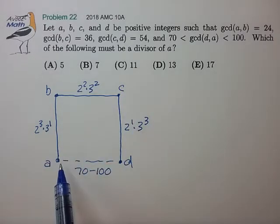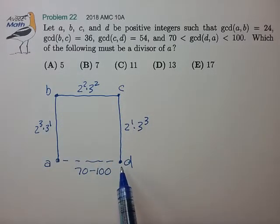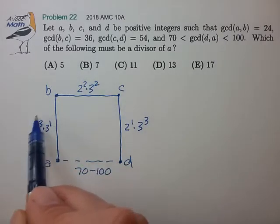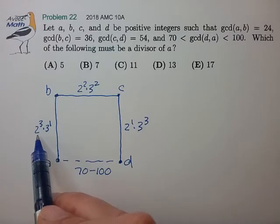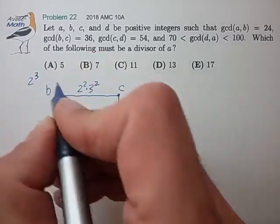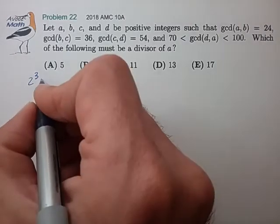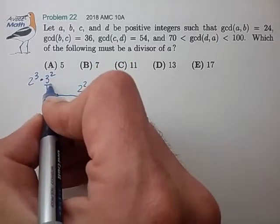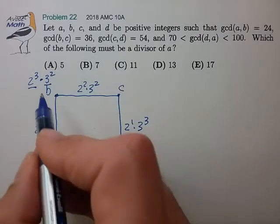So with this information, what does this tell us about the numbers A, B, C, and D? Let's start off with B. Since it has greatest common divisors here and here, we know that B has to have a factor of 2 to the third at least, and it has to have a factor of 3 squared at least. So these are lower bounds on the factors of 2 and 3, and it could have other factors as well.